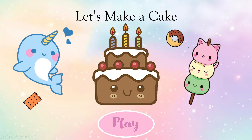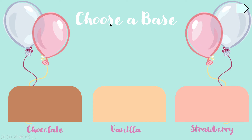So we have 'Choose a Base' — we need to choose a cake base. We have chocolate, and I'm just going to make the light chocolate and erase all the others.